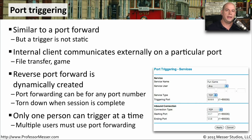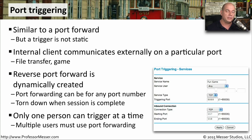Port triggering is a one-to-one relationship. There is a particular external IP address and port number that is mapped to an internal IP address and port number. Because of this, you can't have multiple people trying to configure the exact same type of port triggering on the network — it can really only be done one at a time. So if you do want to set up multiple types of port triggers, you'll probably want to use port forwarding and specify different port numbers on the external part of your network to be mapped to different devices on the internal part of your network.